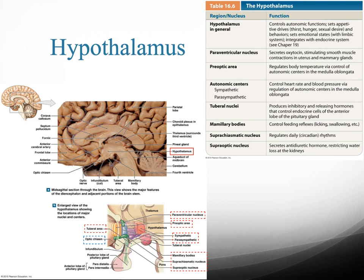Here we have the hypothalamus. Like the name says, 'hypo' means below the thalamus. It's an important structure basically because it's going to have certain structures important for the production of different types of hormones. You can see all the main functions of the hypothalamus — it secretes lots of different hormones. You should know it's important for control of blood pressure, heart rate, hunger, thirst, sexual desire, and things like that.